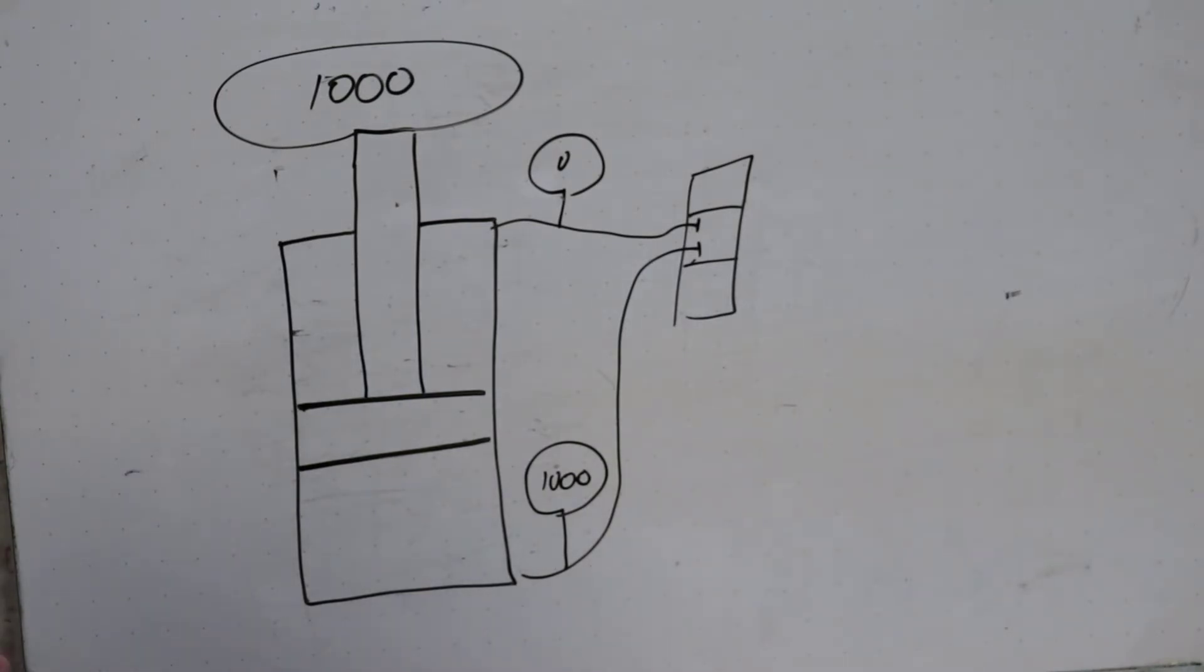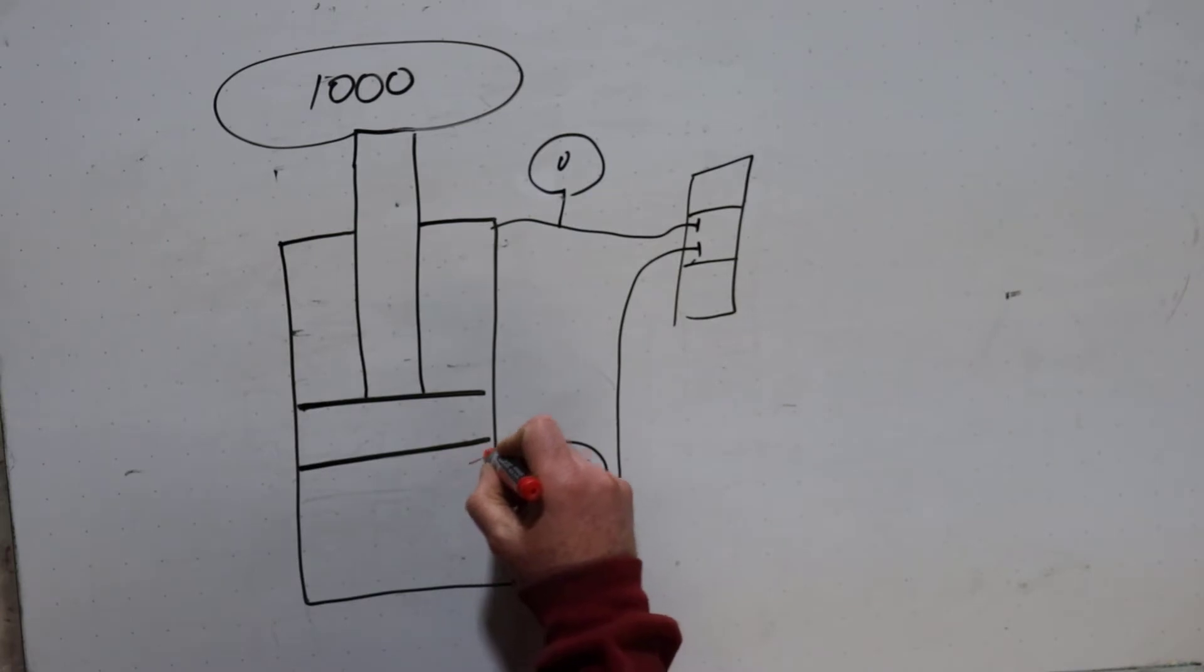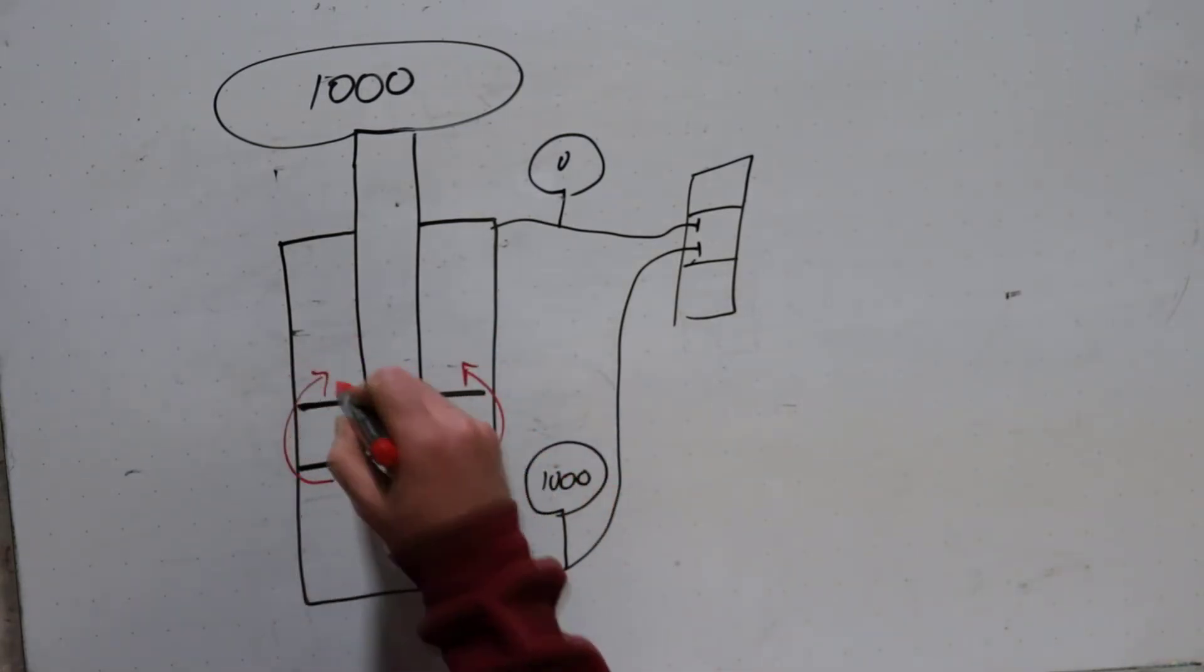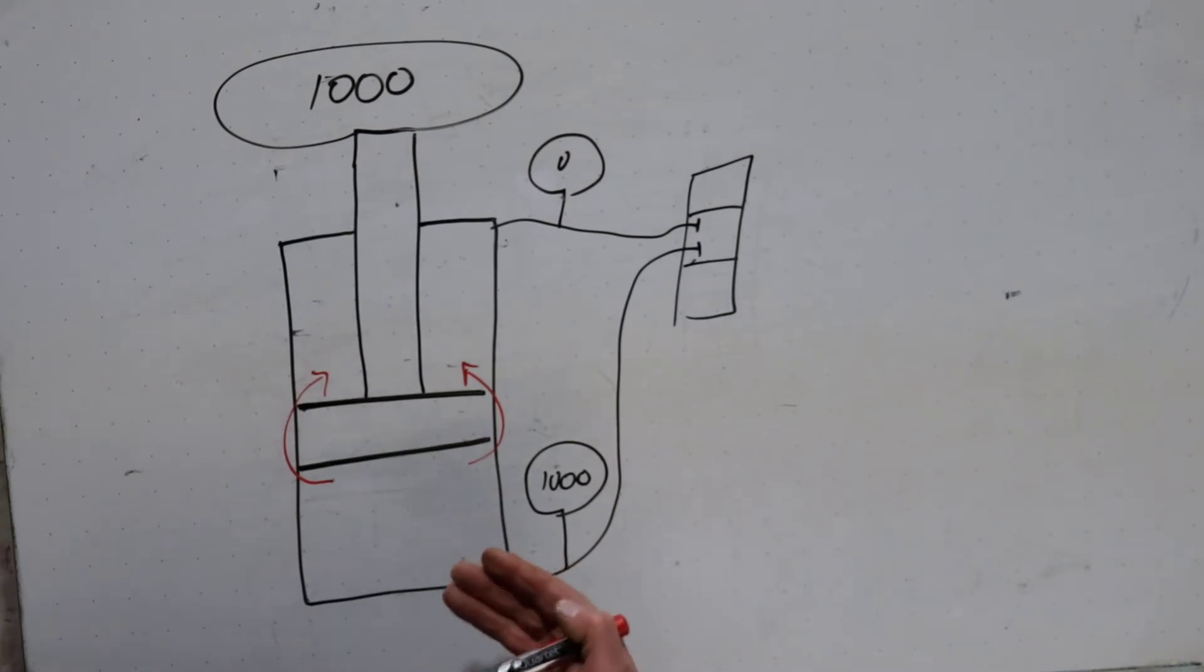The seals on this cylinder fail and the oil can transfer from the high pressure side to the low. Oil always wants to flow from high pressure to low pressure. The difference is, is that this oil in here, it's a larger volume.